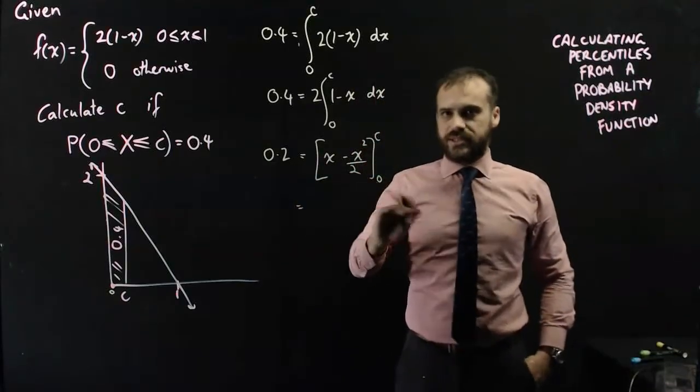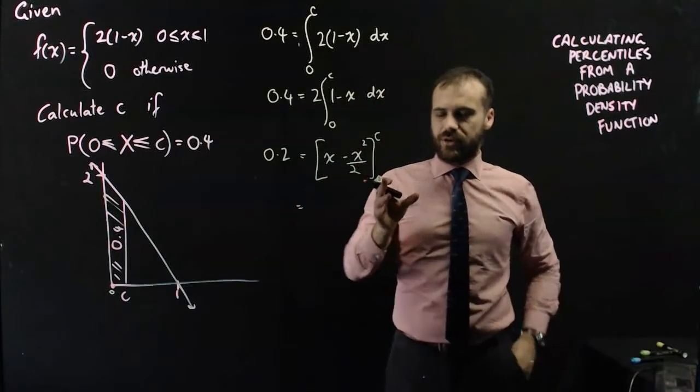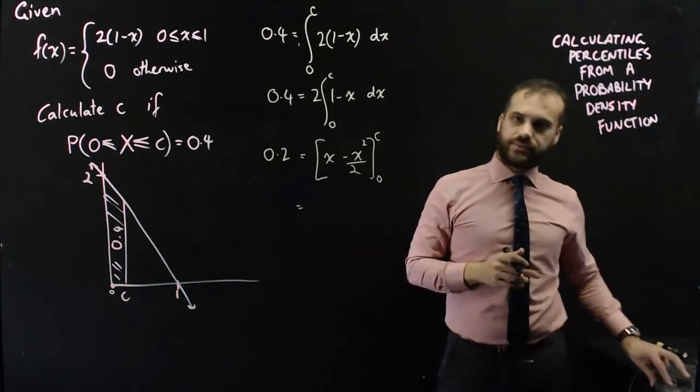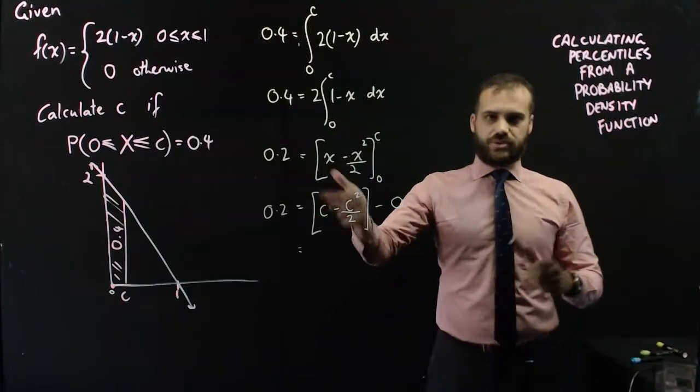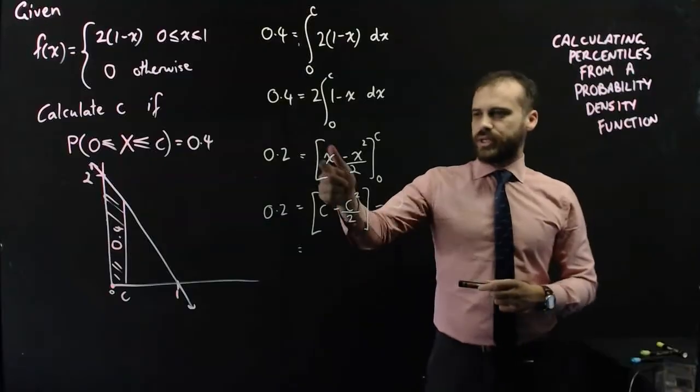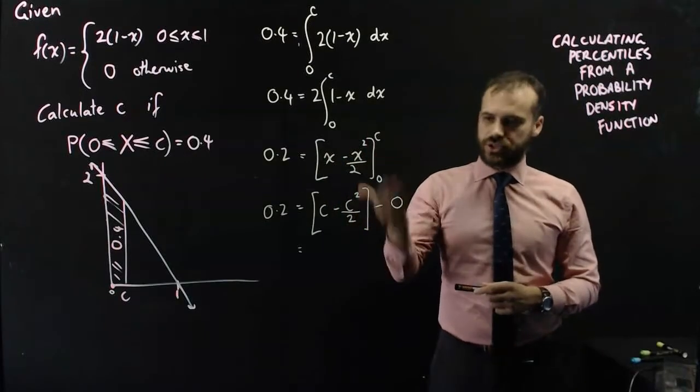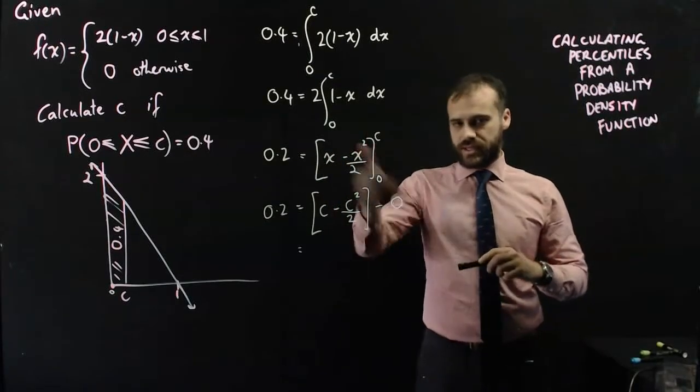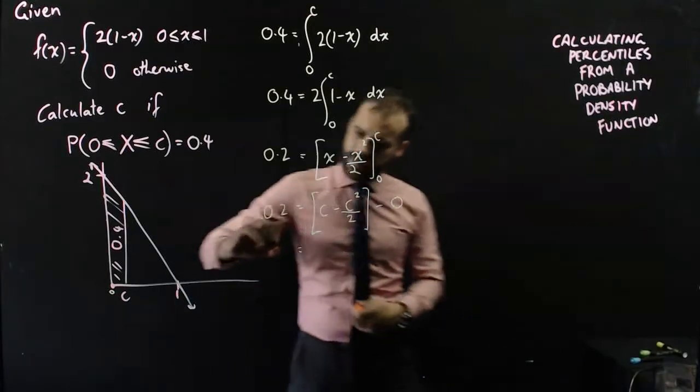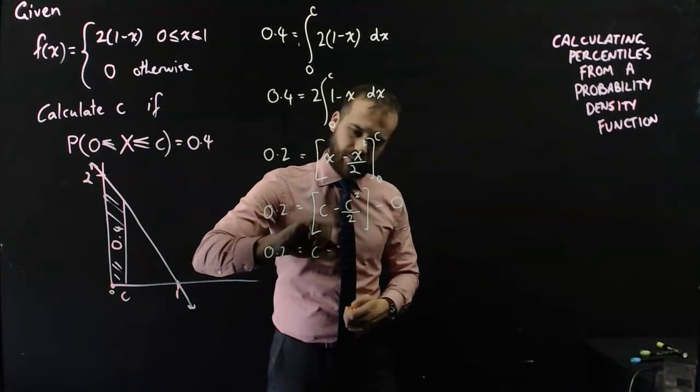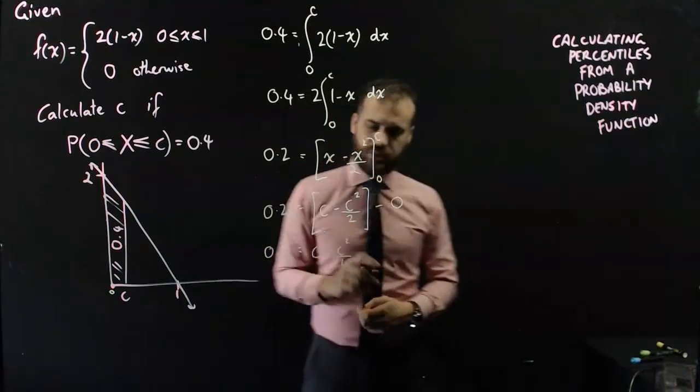Now I'm going to sub in C, I'm going to sub in 0 and subtract one from the other. Now when I sub in C, the X has just become C's. When I sub in 0, I get 0 minus 0 squared on 2, which is just 0. It doesn't always happen, but it does happen in that case. Okay, now that means that 0.2 equals C minus C squared on 2.